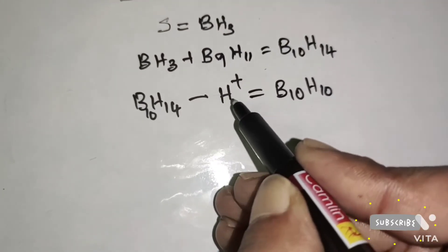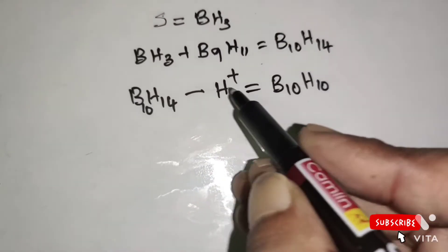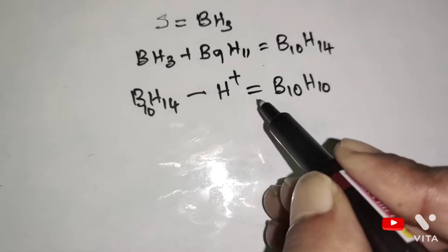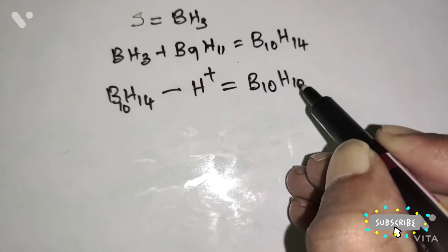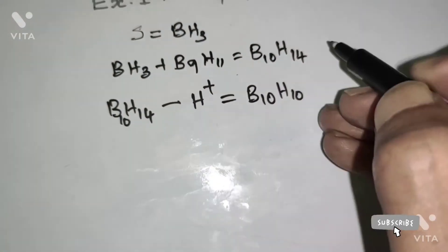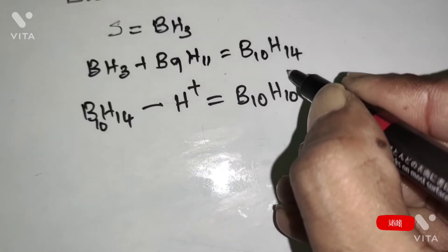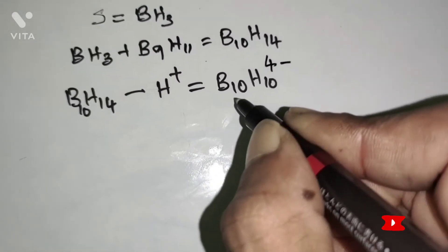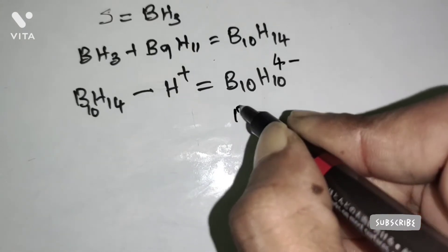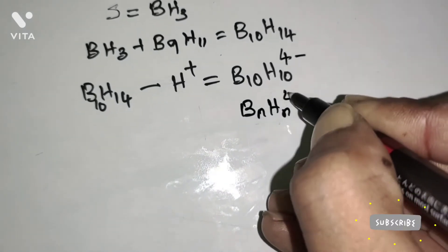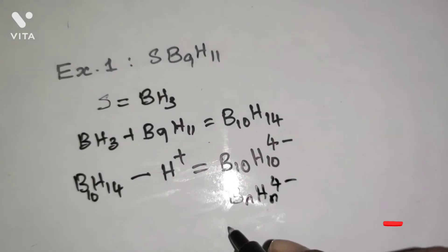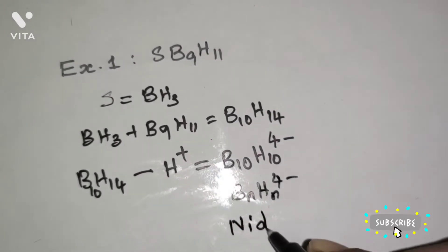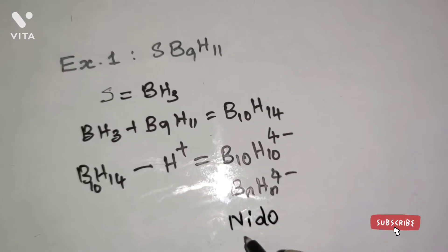We have B10H14. Subtracting 4 H⁺ ions from the formula to equalize the boron and hydrogen atoms gives B10H10, with 4 hydrogen atoms removed. The charge on the compound is 4−. This formula is also written as [BnHn]⁴⁻. [BnHn]⁴⁻ is a nido type of cluster. Therefore, SB9H11 is a nido type of cluster.